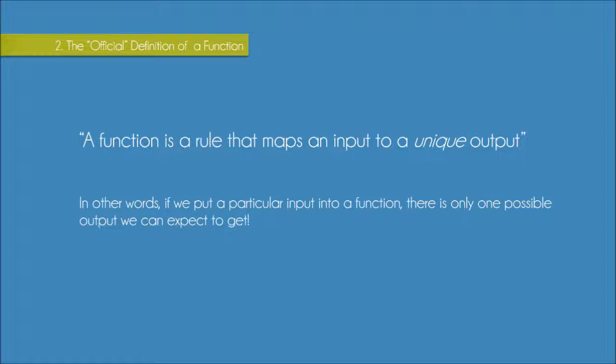So we've seen that a function is just like a rule or process that relates inputs to outputs. But a function is a specific type of rule. And the definition of a function tells us that a function will map an input to a unique output.